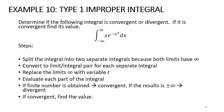The next example is still on Type 1 improper integrals. We want to determine if the integral from negative infinity to positive infinity of x times e to the power of negative x squared dx is convergent or divergent. Since both limits involve infinity, we first split the integral into two separate integrals, then convert each into a limit-integral pair, replacing the infinite limits with variable t.